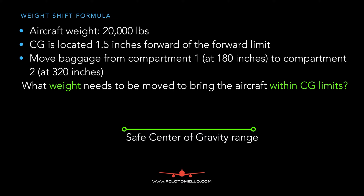Let's take a look at what we're doing here. Let's assume that this is the safe center of gravity range. The current center of gravity is 1.5 inches too far forward, which makes it unsafe to fly. So we want to do a simple calculation to get it back within the limits.